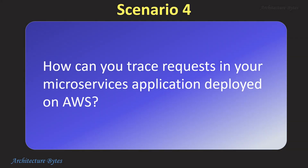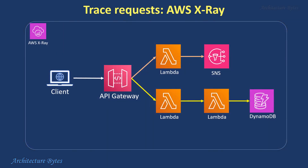How can you trace requests in your microservices application deployed on AWS? Using AWS X-Ray, we can track requests as they flow through the application across Lambda functions and other microservices. This helps identify bottlenecks, visualize request flow, and debug issues.